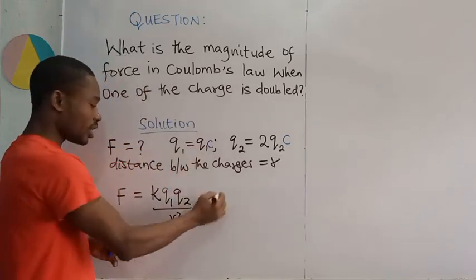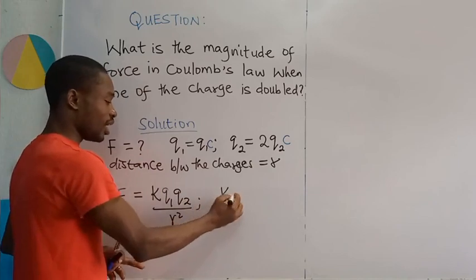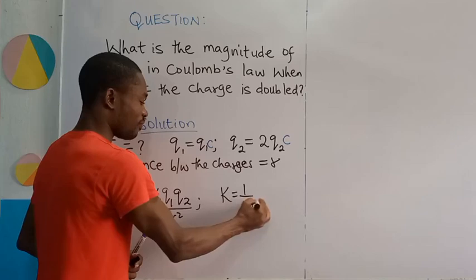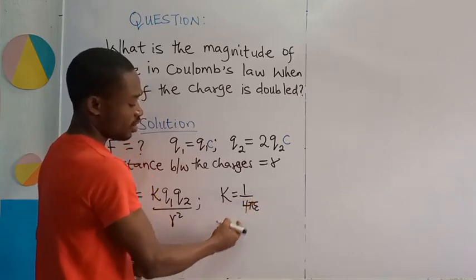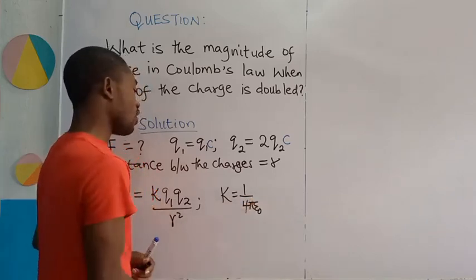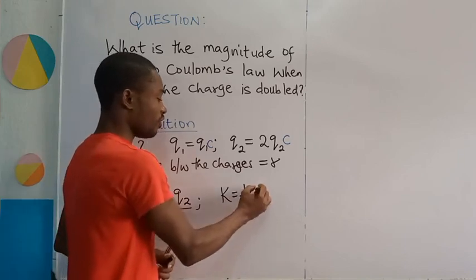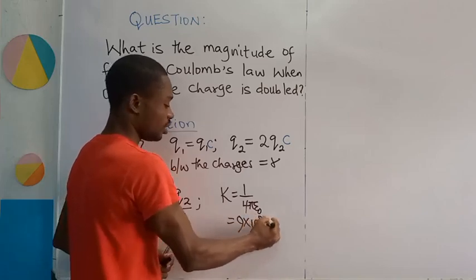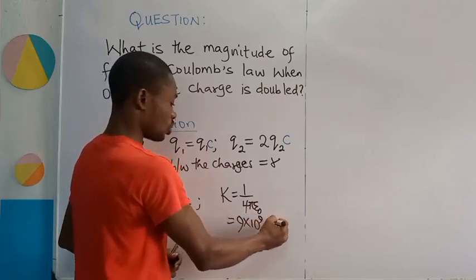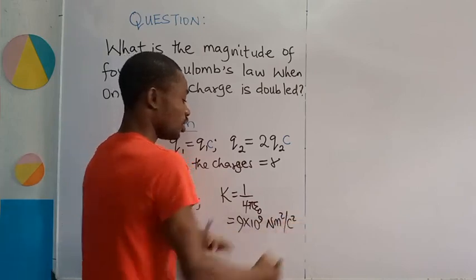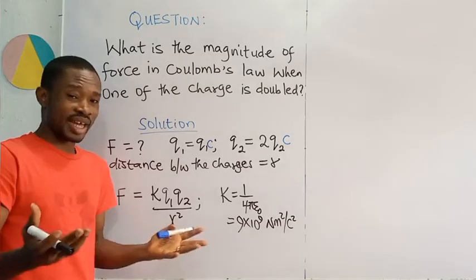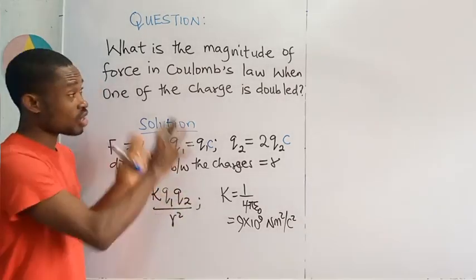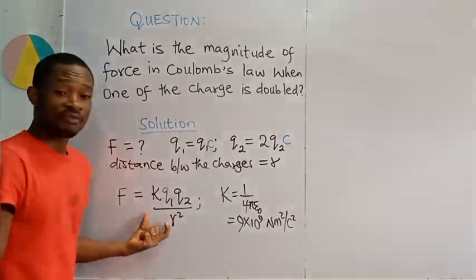Now, please take note that this K has this value assigned to it, 1 over 4 times pi times permitivity of free space. And now the value of this guy is 9 times 10 to the power of 9 Newton square meter per square coulomb. So you want to take note of that. But like I said, we really don't need it in this problem given. Now this is our formula.